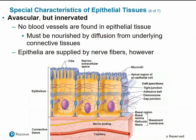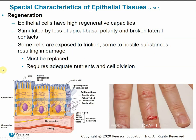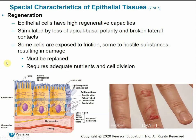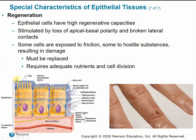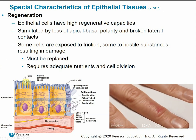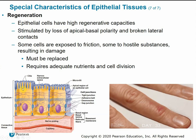Epithelial tissues are avascular but innervated — no blood vessels are found in the actual epithelial layer; all blood vessels are in the connective tissue below, so nutrients come through diffusion. However, they do have their own nerve supply. Epithelial tissues have very high regenerative capacities compared to other tissue types. Regeneration is stimulated by a loss of polarity — when the epithelium becomes damaged, that can trigger regeneration. Tissues like skin and the inside of the mouth are constantly exposed to friction and hostile substances, so cells constantly need to be replaced.